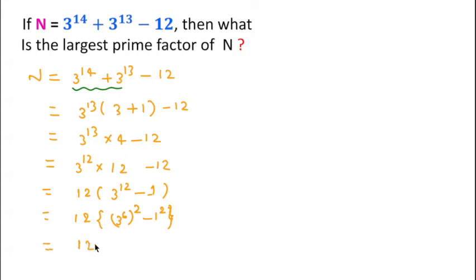Using this formula, that is, the formula is a squared minus b squared equal to a minus b times a plus b, we can write. So I am writing here 3 to the power 6 minus 1 and 3 to the power 6 plus 1.